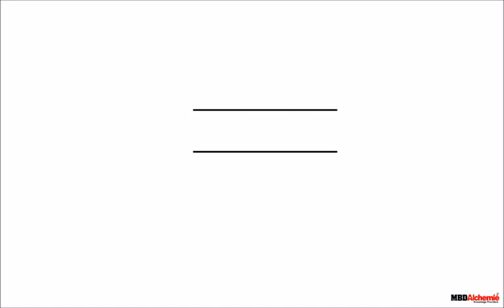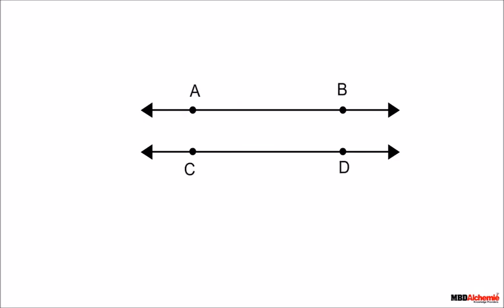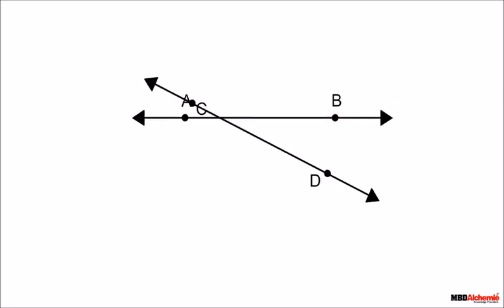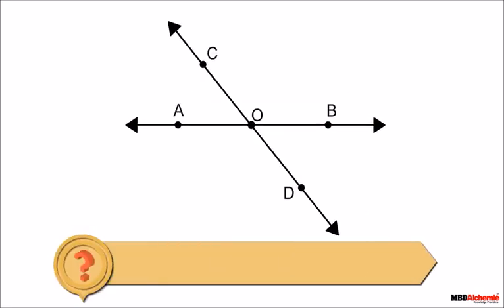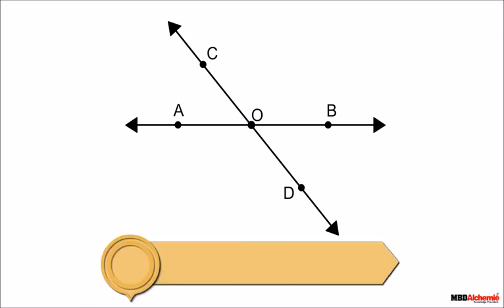Let's draw two line segments which can be extended in both directions to form two lines. If I place these lines so that both intersect each other at point O, do they form any angles, and if yes, then how many angles?